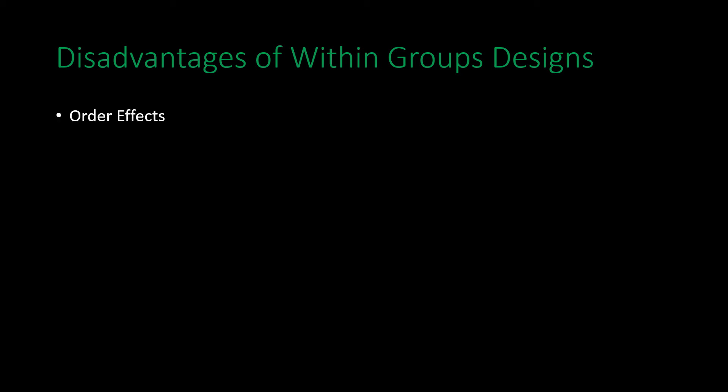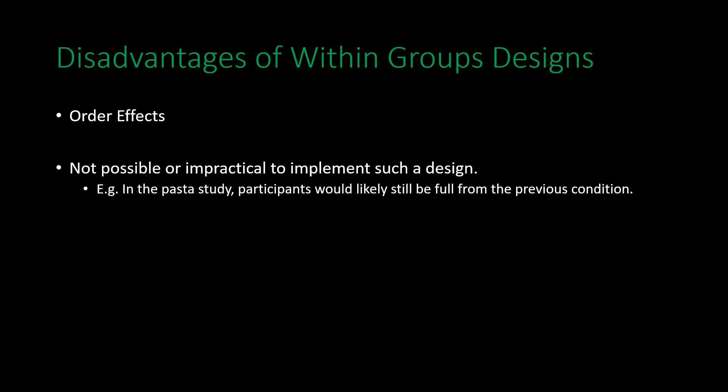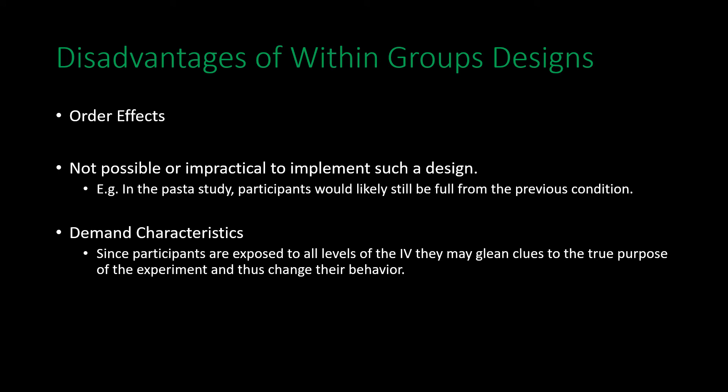Other disadvantages of within groups designs: beyond order effects, it is sometimes not possible or impractical to implement such a design — for example, in the pasta study, participants would likely still be full from the previous condition. Additionally, demand characteristics — clues participants might glean about the purpose of the study or how they are supposed to respond — are an even greater concern in within groups designs, because participants are exposed to all levels of the independent variable and may figure out the true purpose and change their behavior accordingly.